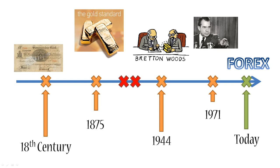The main two takeaways from this timeline are: first, it hasn't always been this simple — it took time for nations to develop the current forex system we have. And second, there have been several attempts at creating fixed exchange rates between currencies, such as the gold standard and the Bretton Woods agreement. All of these have failed because it is very artificial to put such constraints on currencies and try to control them. This illustrates that the forex market we currently have is by far the most natural system to govern the exchange rates of currencies.